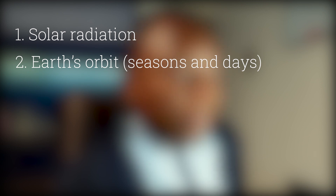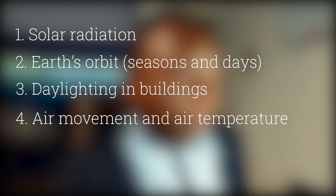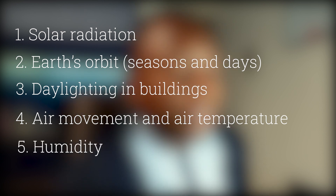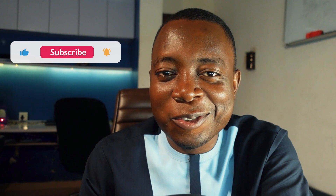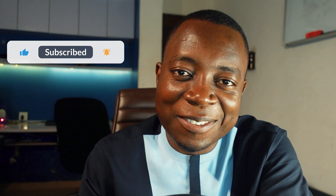In preparation for our lectures this week, I'm going to divide the class into groups to make short presentations on the following: number one, solar radiation; number two, earth orbit that results in seasons and days; number three, daylight; number four, air movement and air temperature; number five, humidity; number six, rainfall. These presentations will improve our understanding of how our complex climate system works. See you in class. Peace.